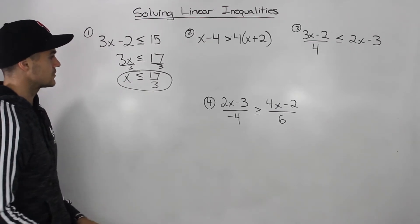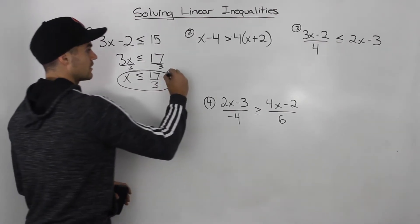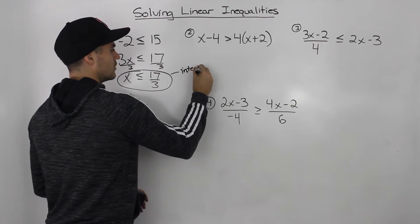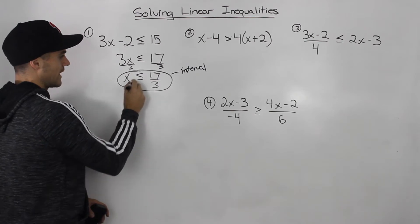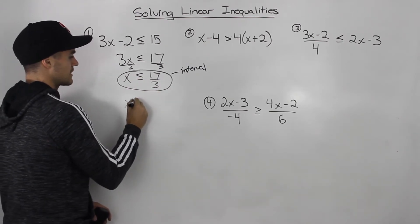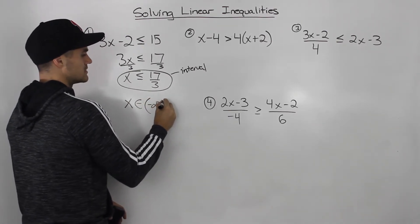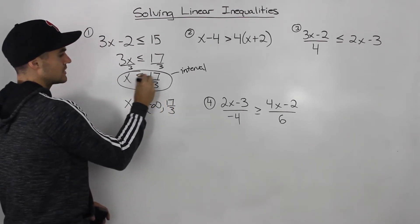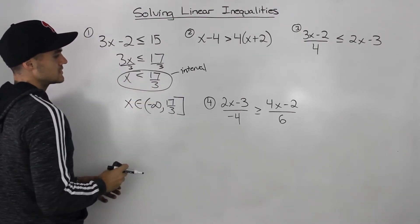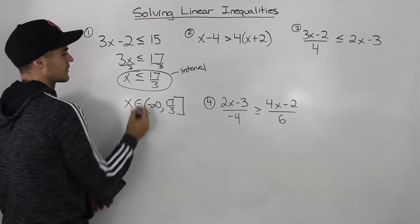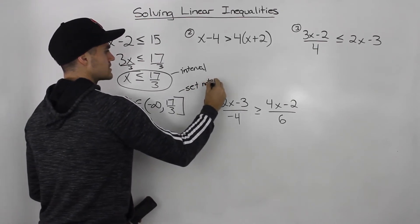So x is less than or equal to 17 over 3. Now there are other ways to express this answer. This answer here is in interval notation. You can also express this in set notation. X less than or equal to 17 over 3 is the same thing as x being an element from negative infinity to 17 over 3. And since it's less than or equal to 17 over 3, that 17 over 3 would be in square brackets. If it was just less than 17 over 3, this would be a circle bracket. We've gone over set notation before, but now it's going to come back.